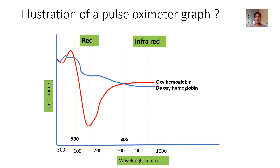To understand this better, we illustrate with the pulse oximeter graph. On the y-axis, mark the absorbances; on the x-axis, mark the wavelength in nanometers from 500 to 1000 nanometers. 660 nanometers corresponds to the red region and 940 nanometers corresponds to the infrared region. In addition, you should know two more wavelengths — the isobestic points at 590 nanometers and 805 nanometers. These will be explained shortly.